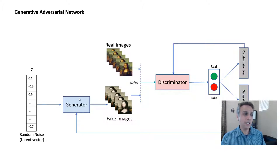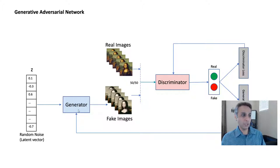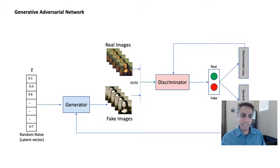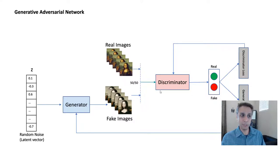The output of the generator is a fake image. How good that fake image is depends upon how well the generator is trained. We have to train it for a while to be able to generate realistic-looking images that are good enough to confuse the discriminator — the whole point of the generator is to make sure the discriminator doesn't catch the fake images.